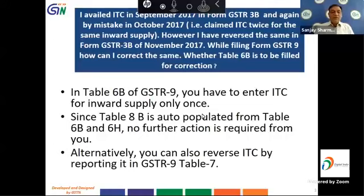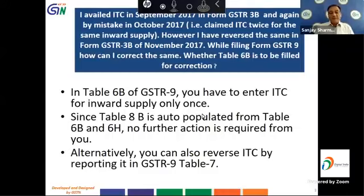His other part of the question is whether Table 6B is to be filled up for correction. In Table 6B of GSTR 9, ITC for inward supply is to be entered only once. Since Table 8B of GSTR 9 is auto-populated from Tables 6B and 6H, no further action is required. Alternatively, you can reverse the ITC by reporting it in GSTR 9 Table 7.